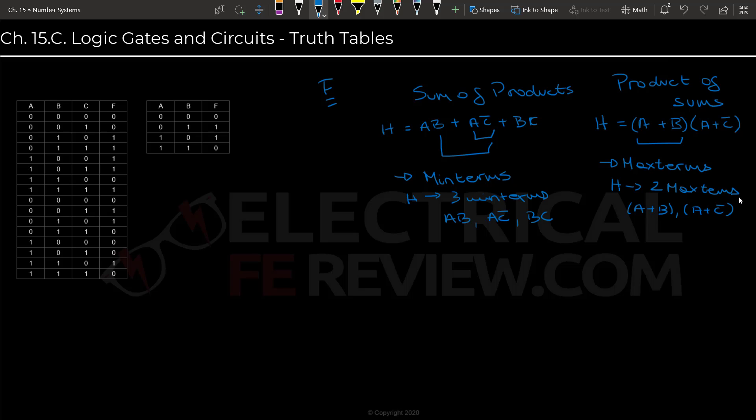The next most important thing that we are going to consider for both of these scenarios is that for sum of products, we will be looking for ones in the function F. So we would be paying attention to these guys for sum of products. And then for product of sums, we will be looking for zeros.